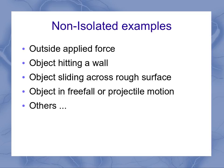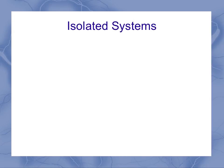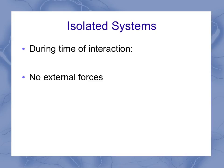There are many other examples as well, but the concept is there has to be an external force which is not balanced out acting on the system. Now let's think about isolated systems. During the time of interaction, there are no external forces — or at least they all balance out. For example, you could have an object sitting on a smooth surface, in which case it has a weight and a normal force, but those exactly balance each other out.